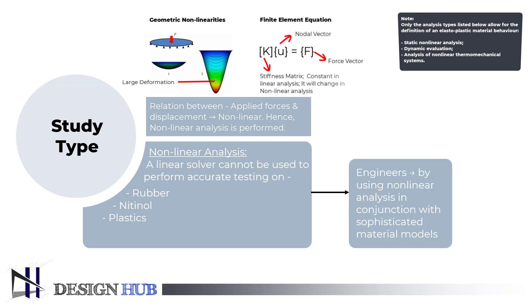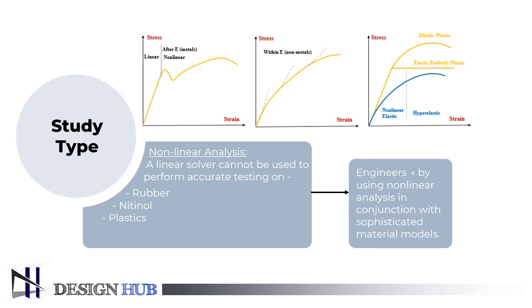Because of these effects, the stiffness matrix changes as the load is applied. In contrast, the stiffness matrix was constant in the linear static analysis. As a result, a different solving method and, consequently, a different solver, are needed for the non-linear analysis. Engineers can accurately analyze designs that incorporate these materials by using non-linear analysis in conjunction with sophisticated material models.